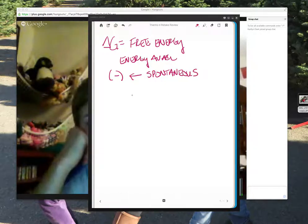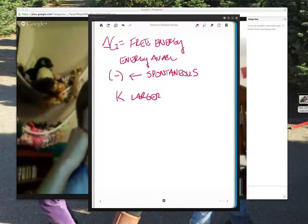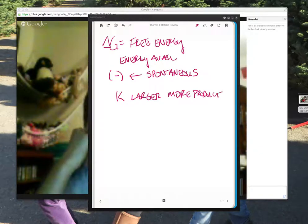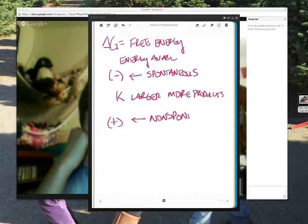And if it does that, if it moves towards that, then K usually is larger. It's all relative to a certain extent, but you're moving towards more products. If it's positive, then it's non-spontaneous and it would require something to get it going. K is going to be smaller and it's going to favor the reactants.